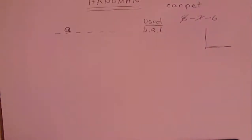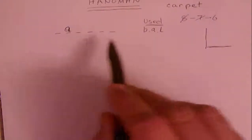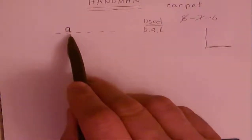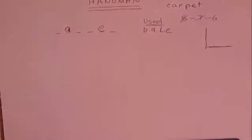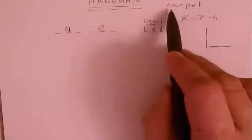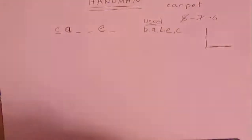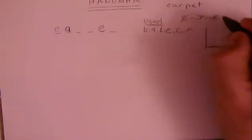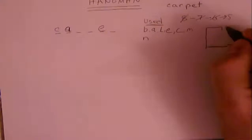Maybe there's another vowel — you guess 'e'. I go through my word: the fifth letter is an e, so I fill that in. You've used 'e'. You keep guessing letters — if you guess 'c' next, it's in position one, I put it in for you. Then you guess 'm' — not in there, guesses down to five. You guess 'n' — not in there, guesses down to four.